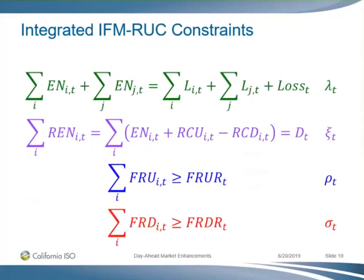The reliability energy schedule is basically your financial energy schedule plus or minus the reliability capacity up or down. So we've separated the capacity product into two pieces: the capacity needed to get to the demand forecast, which is the reliability capacity, and the piece needed for uncertainty, which is the flexible ramp product. They're both priced at the same cost — the cost of the flexible ramp bid.